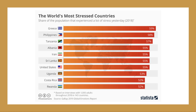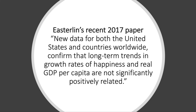This is a chart from the Gallup Global Emotions report showing the population experiencing the most stress in the world. Interestingly, Greece comes top — a country that's been through the economic mill in the last 10 to 15 years. Easterlin produced a paper in 2017 in response to the Wolfers and Stevenson critique, saying that new data for both the United States and countries worldwide confirms that long-term trends in growth rates of happiness and real GDP per capita are not significantly positively related — suggesting there isn't a clear, strong relationship between growth of per capita incomes and improvements in measured happiness. He believes the Easterlin paradox holds true.